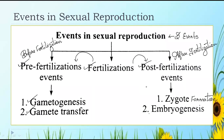In pre-fertilization there are two types: gametogenesis and gamet transfer. In the post-fertilization event, there is zygote formation and embryogenesis.